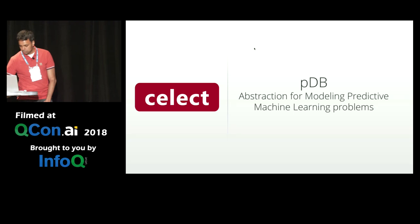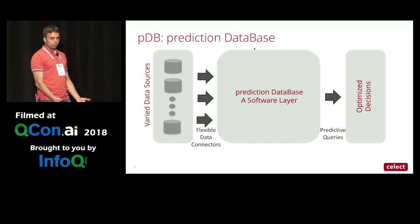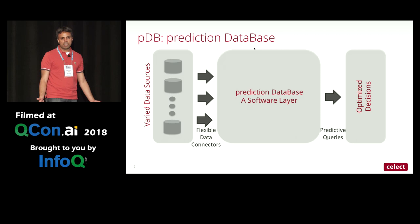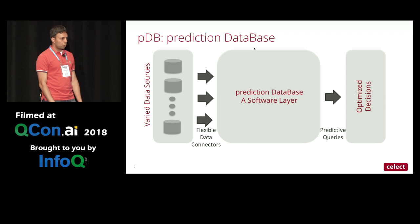The way we think about our platform is it's a software layer. It works like a database in the sense that you can query it for data. If data is in the database, you get back the data. If it's not, you get back a prediction along with confidence and some provenance information.